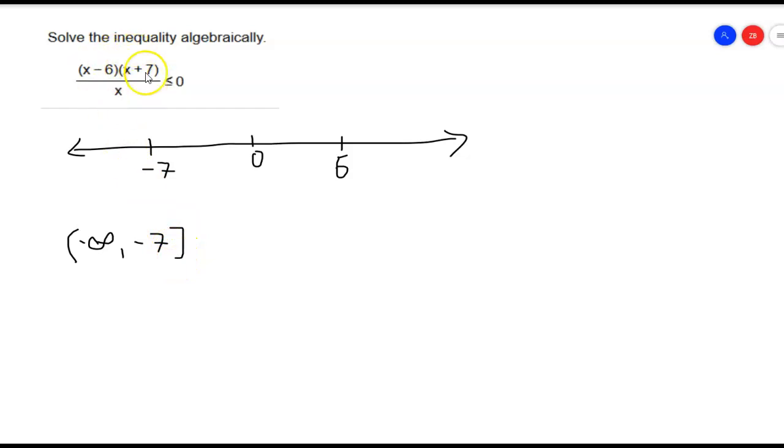Because negative 7 makes this equal to 0. And that still makes the equation true. And then I'm going to combine that. And I'm going to go from... So I had a negative, positive, negative, and a positive, right?